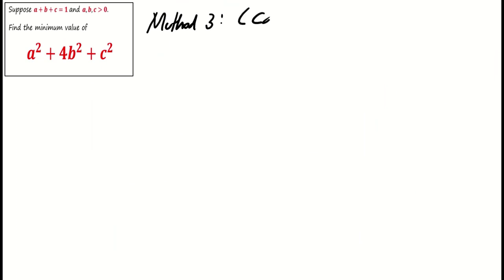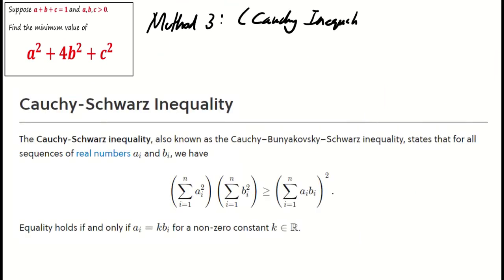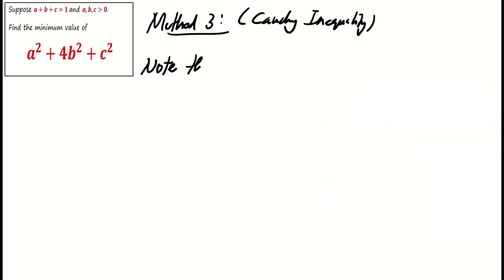Now method 3 involves using the Cauchy inequality. We state that the summation of x square times the summation of y square is at least the square of the summation of xy. With equality, equality holds if and only if xi over yi equals xj over yj for all i not equal j. Applying this, we find 1 plus 1 over 4 plus 1 times a square plus 4b square plus c square is at least a plus b plus c square.